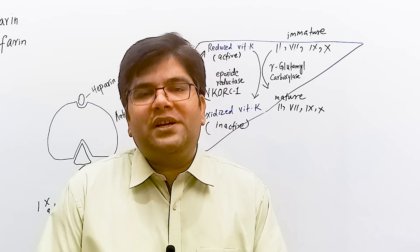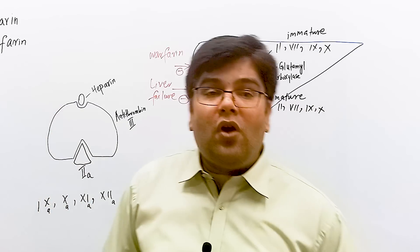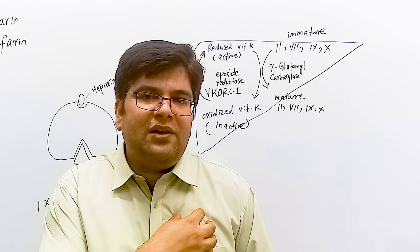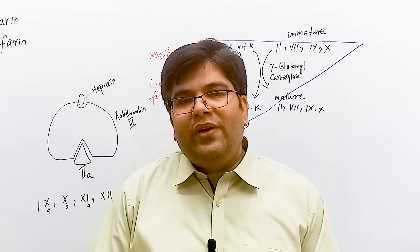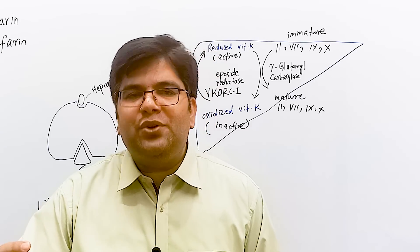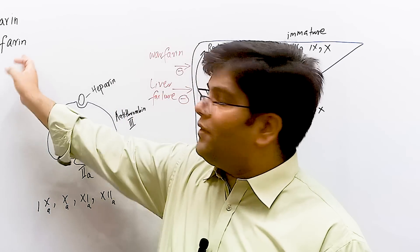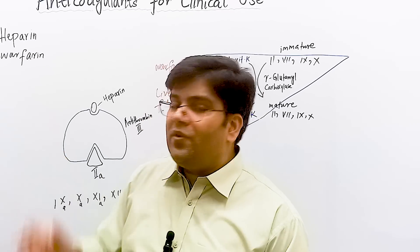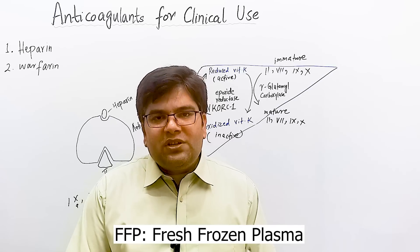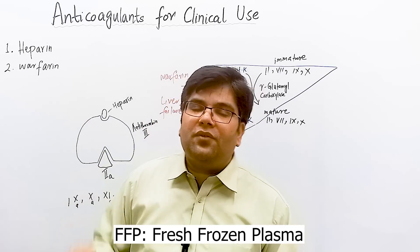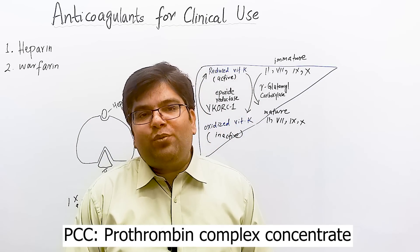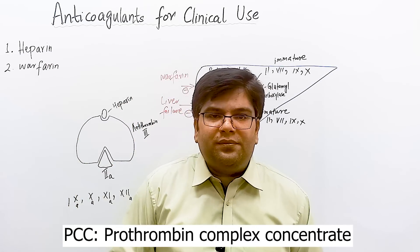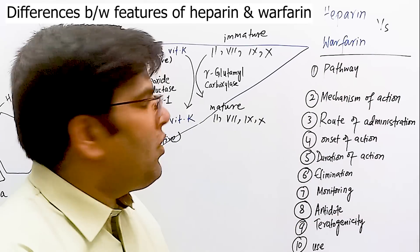Warfarin is an oral anticoagulant used to prevent thrombosis in conditions such as myocardial infarction, stroke, and deep vein thrombosis of the legs. The antidotes for warfarin are: vitamin K, which acts slowly and antagonizes warfarin within 12 to 24 hours; fresh frozen plasma, which takes a few hours; and prothrombin complex concentrate (PCC), which can antagonize warfarin's action within just several minutes.